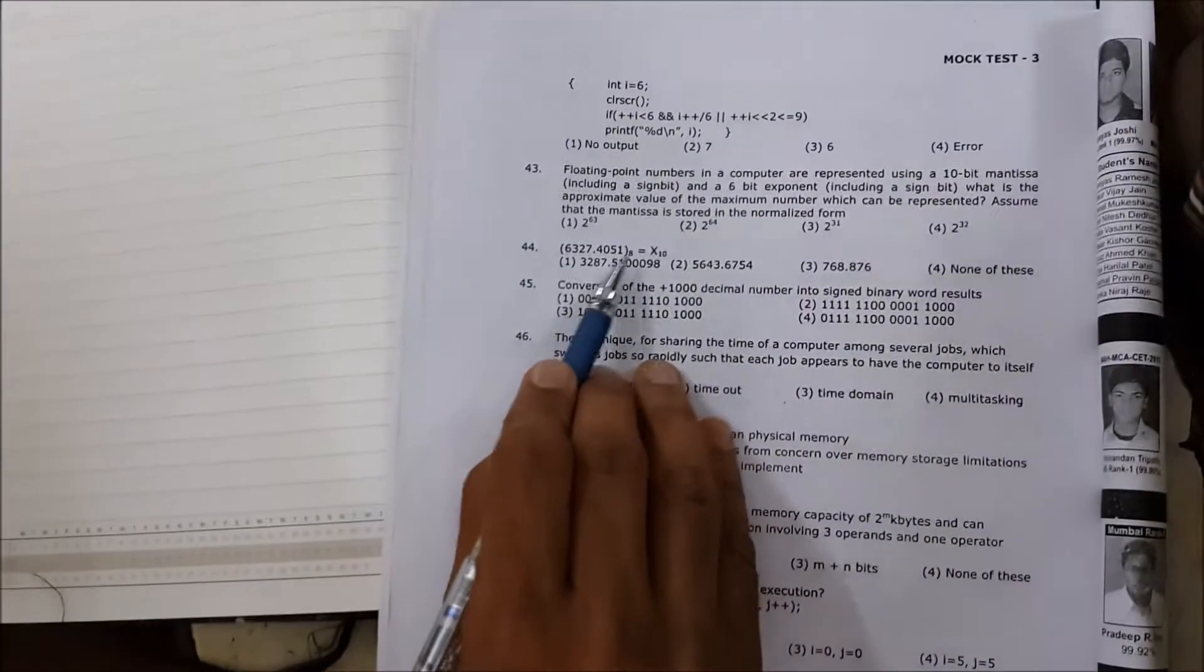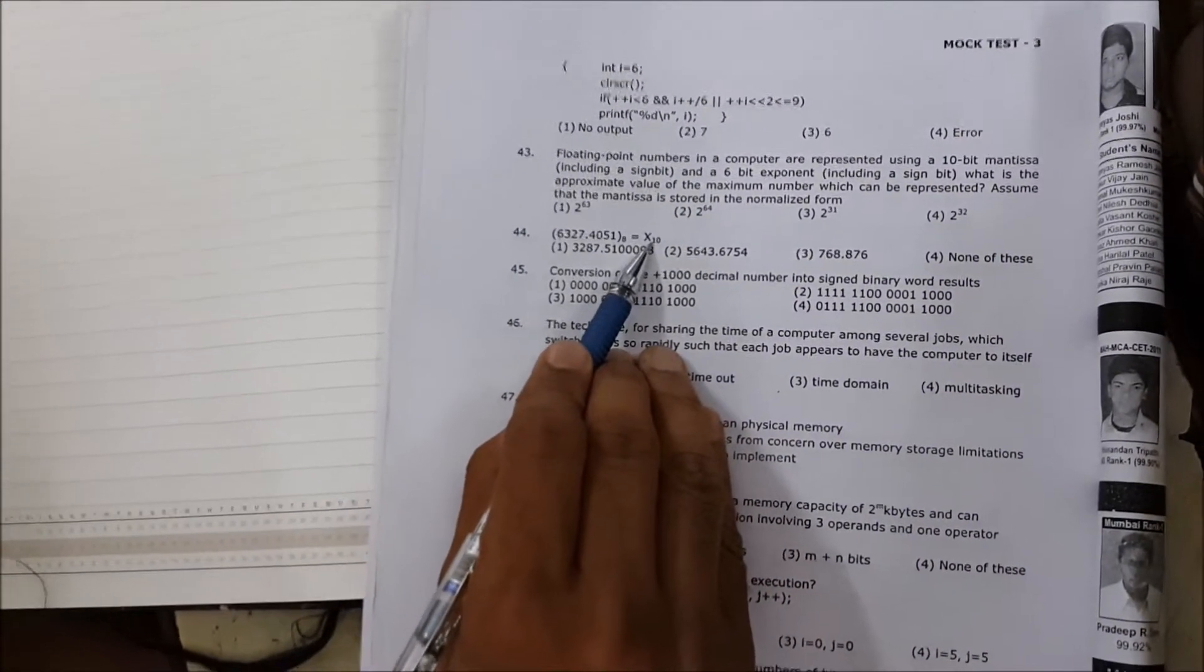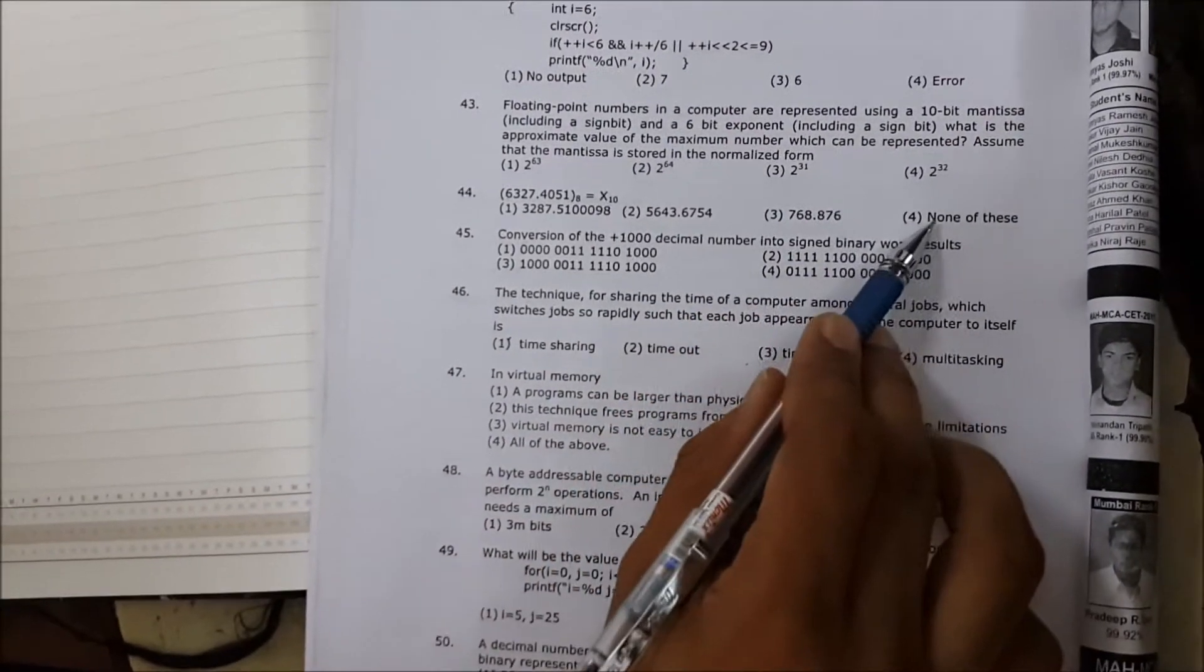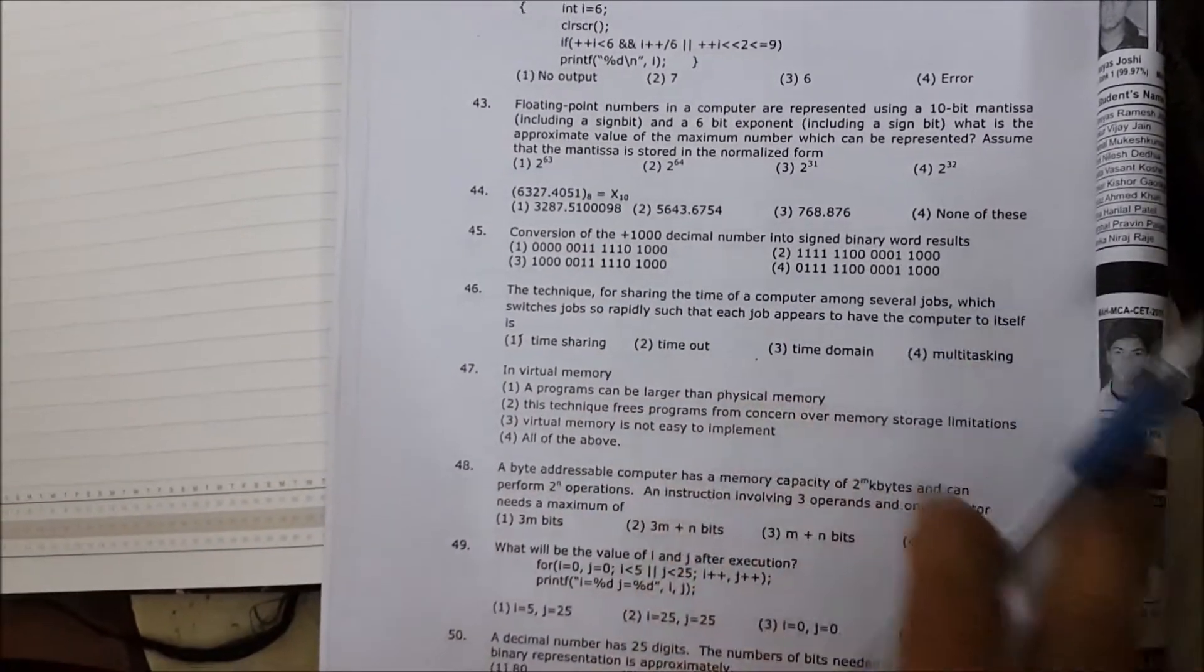So the question here is you have to convert a number from octal to decimal. That means we have to use powers of 8. And you have these 4 options, so let's try to find the answer.